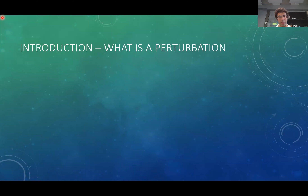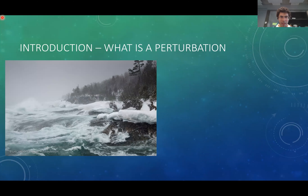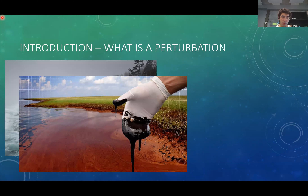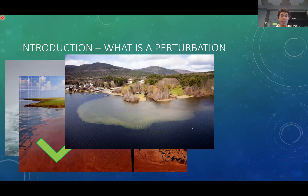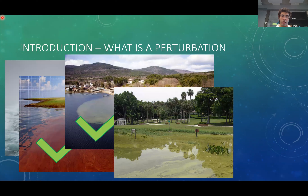I wouldn't know a better way to start this presentation than by defining what a perturbation is together with you. Most people would agree that a lake being hit by a storm is a perturbation, that an oil spill in a water body is a perturbation, that the superficial runoff of a river entering a lake very severely can be a perturbation. What is less common is to agree that the cyclic turbid state of an eutrophic lake is not being considered as a perturbation.